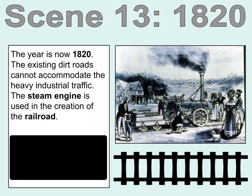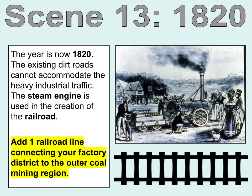Scene 13. The year is now 1820. The existing dirt roads cannot accommodate the heavy industrial traffic. The steam engine is used in the creation of the railroad. Add one railroad line connecting your factory district to the outer coal mining region.